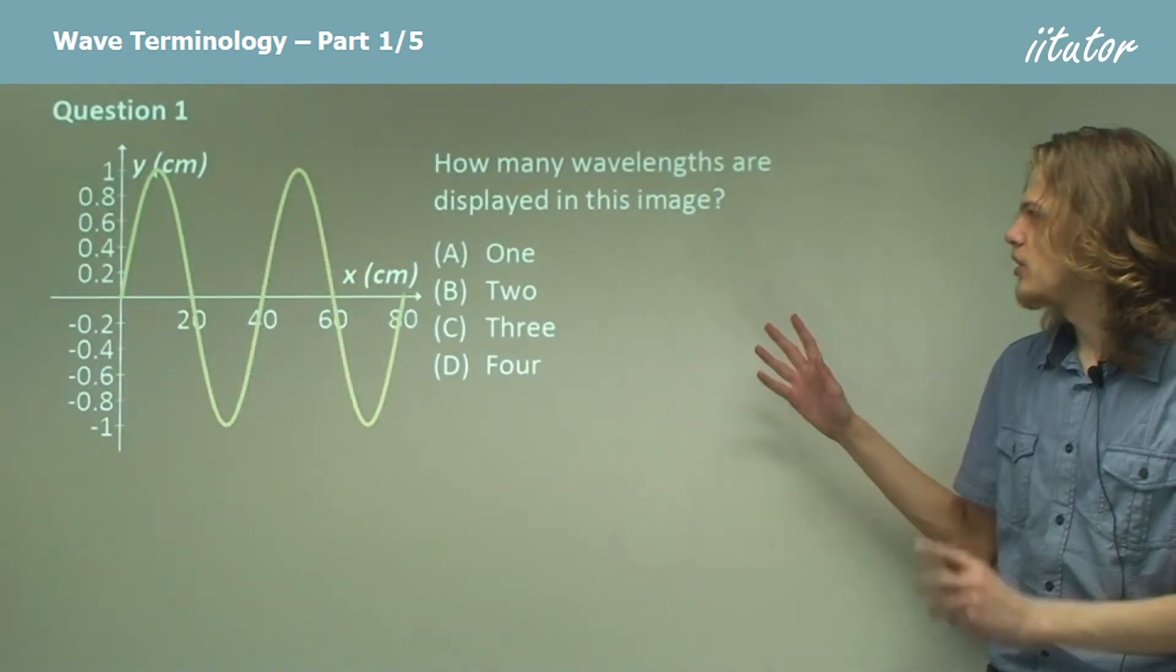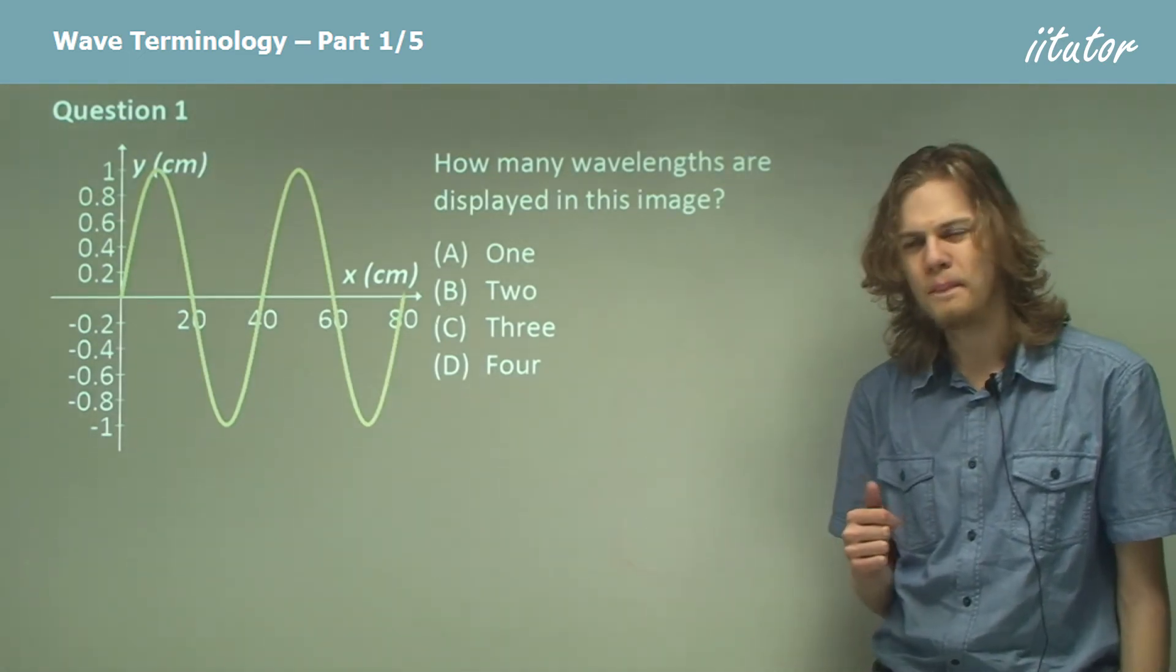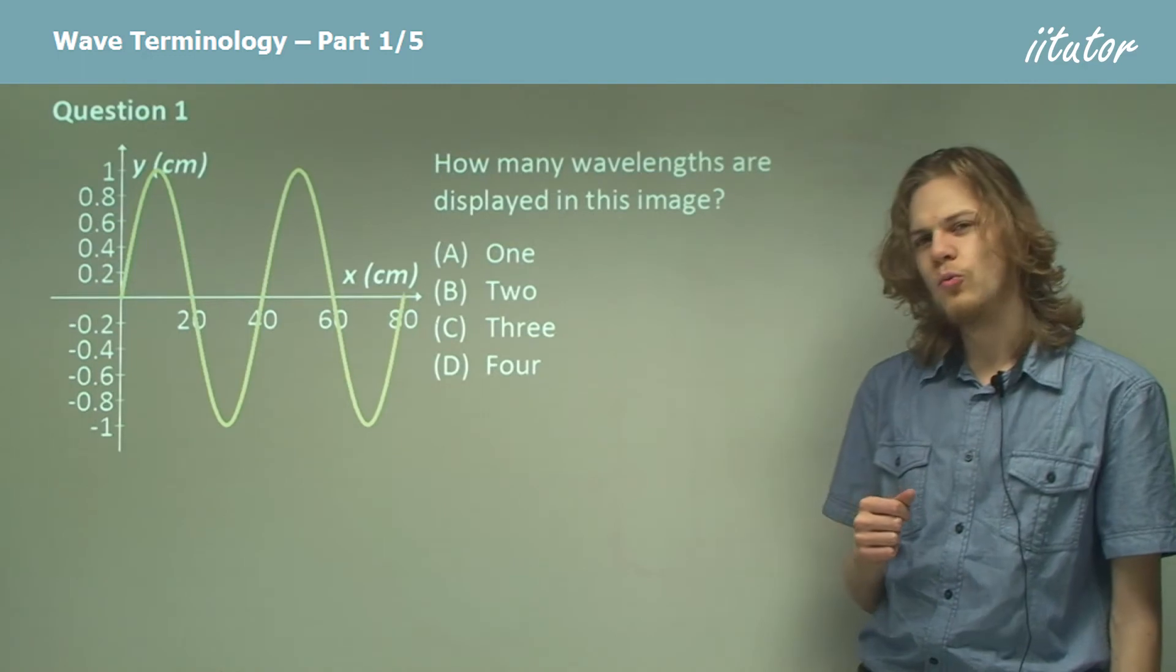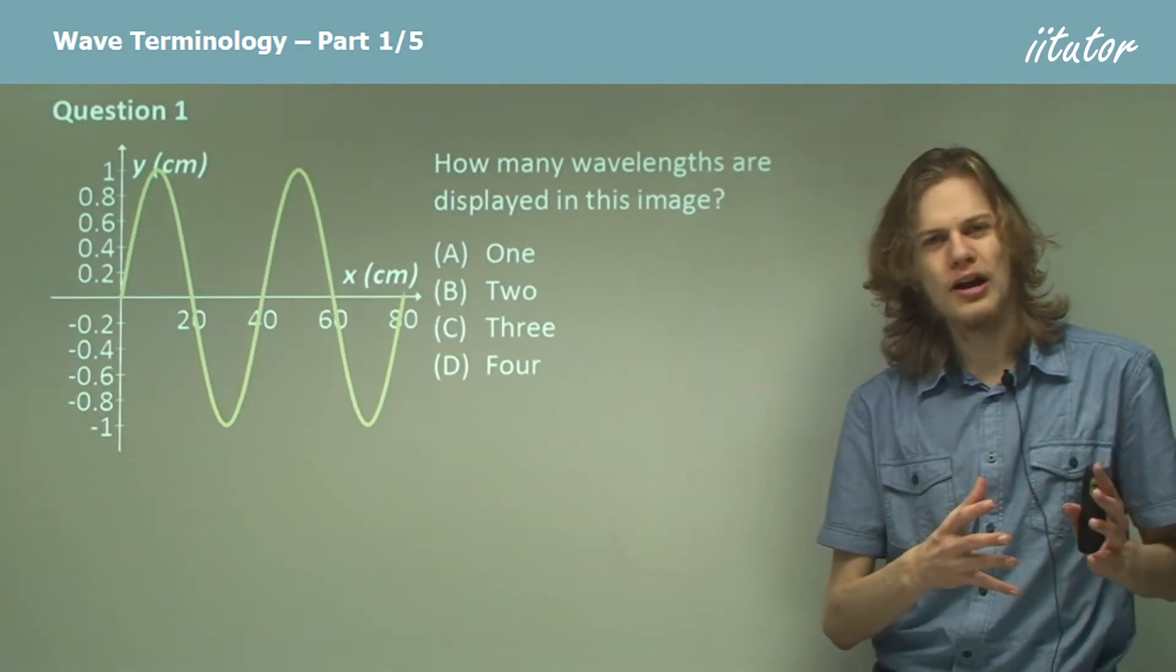How many wavelengths are displayed in this image? It's somewhere between one and four. So what's a wavelength again? It's the total pattern of the wave repeated.